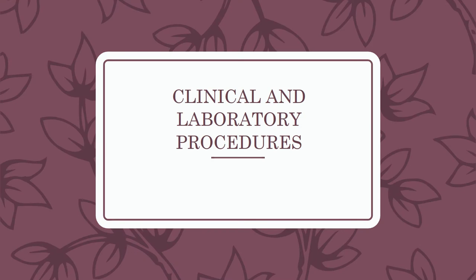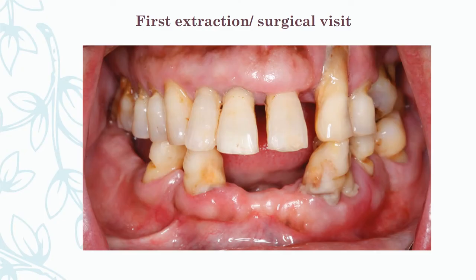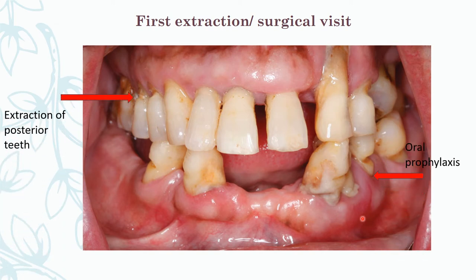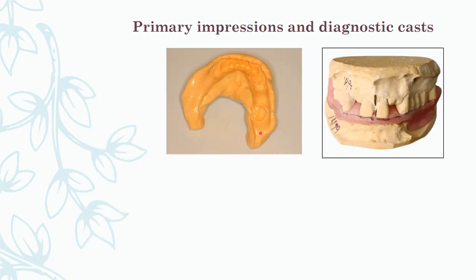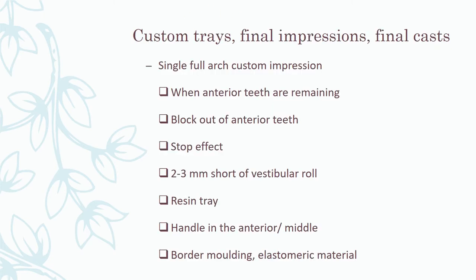Coming to clinical and lab procedures: the first visit is the extraction or surgical visit. Whatever teeth are supposed to be extracted first will be extracted in sectional form. Before extraction, oral prophylaxis is done, then the posterior teeth are extracted first. An impression and primary diagnostic cast is taken, and a bite is taken using a single full-arch custom tray or two-stage custom tray.